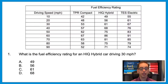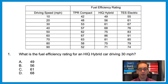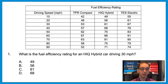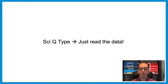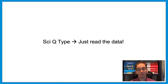Question one: What is the fuel efficiency rating for an HIQ hybrid car driving 30 miles per hour? They're giving us the fuel efficiency rating for three different types of cars, showing what happens to each rating as the car goes faster. This question is as transparent as it seems. All you have to do is go to the HIQ column and read the number from the row of 30 miles per hour. The answer is C, 61. For many types of science questions, all you have to do is just read the data.